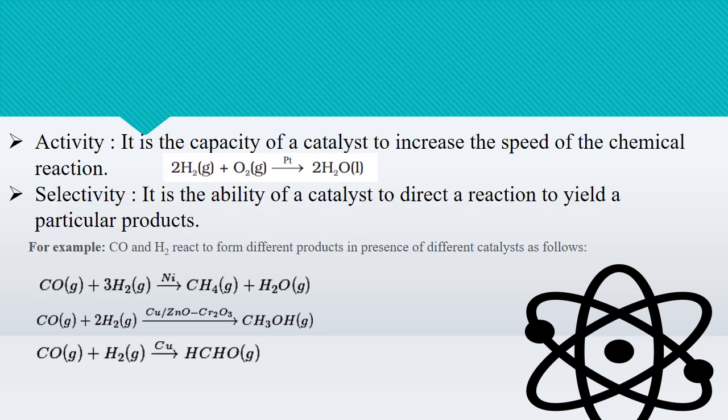The capacity of a catalyst to increase the speed of a chemical reaction is known as activity. For example, in the formation of water molecules in the presence of platinum as catalyst, the activity of a catalyst totally depends upon the strength of chemisorption to a large extent.